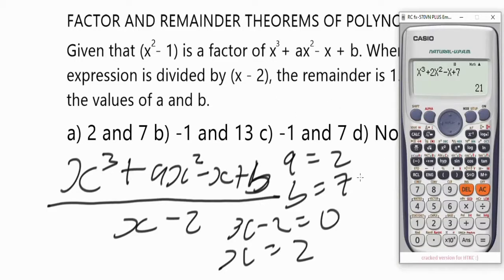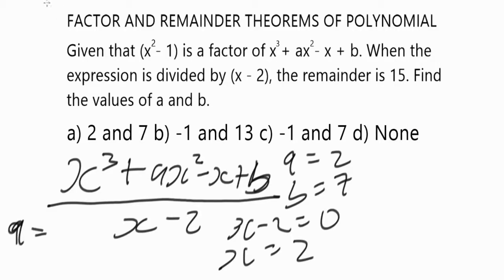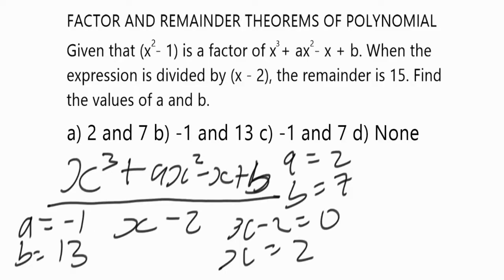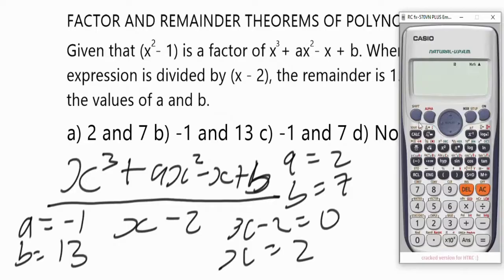That means we are going to check option B. This time around I'm going to take our a to be negative one and our b to be 13. The two is still stored as valid. So let's input: x cubed, plus — our a is negative one — so we're going to have minus x squared, then minus x, and plus 13. So let's press equals and see if we're going to have an output of 15 as the remainder.